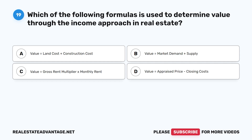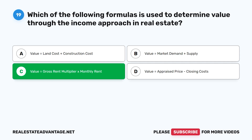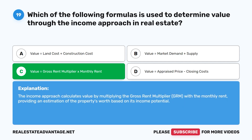Question 19: Which of the following formulas is used to determine value through the income approach in real estate? A. Value = land cost + construction cost. B. Value = market demand + supply. C. Value = gross rent multiplier × monthly rent. D. Value = appraised price − closing costs. The correct answer is C. The income approach calculates value by multiplying the gross rent multiplier (GRM) with the monthly rent, providing an estimation of the property's worth based on its income potential.